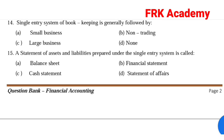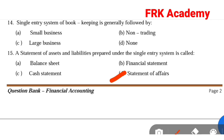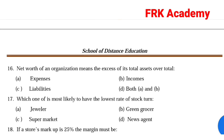Question: A statement of assets and liabilities prepared under single entry system is called. Answer: Option D, statement of affairs. Under single entry system, the balance sheet equivalent is known as the statement of affairs.